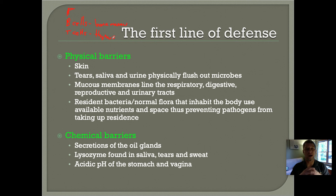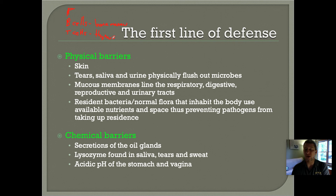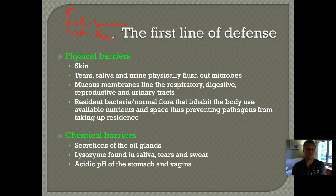When you cry, it washes things out — think about allergy season, when people get watery eyes. All that fluid is trying to wash pollen or whatever you're allergic to out of your system. Saliva does the same thing and also has digestive enzymes. Urine can wash microbes right out of your urinary system. There are also mucus membranes that line your trachea and lungs, digestive tract, reproductive tract, and urinary tract — mucus catches pathogens like viruses, bacteria, and pollen and keeps them from getting into the body.